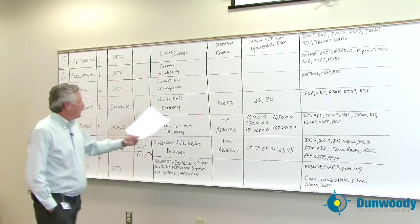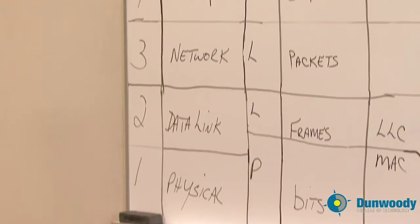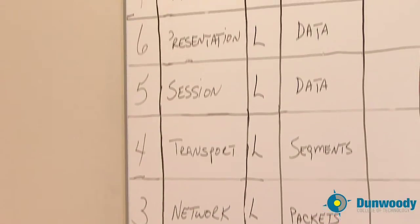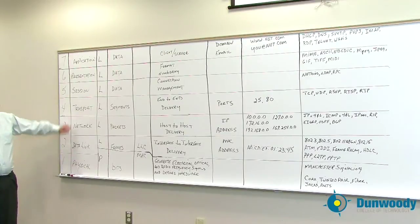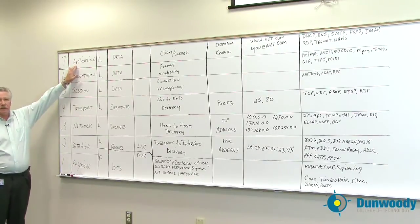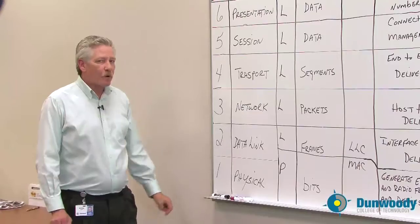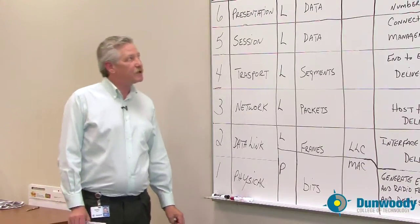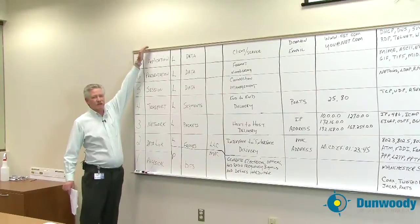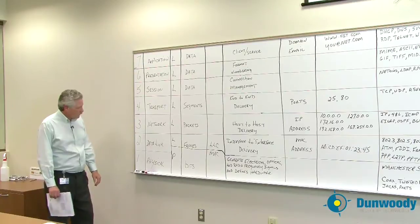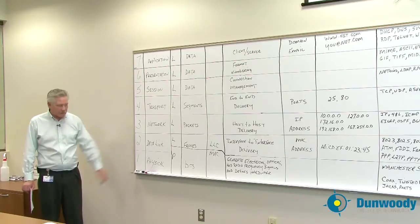This is what the OSI model looks like, at least in my classroom. It's a seven-layer model representing from the physical layer all the way up to the application layer. Please don't confuse the application layer with programs or software such as Microsoft Word or Excel — those actually sit above this layer. The two layers I'm going to talk about in this segment are the physical layer and the data link layer.